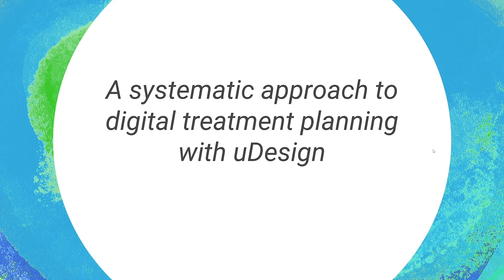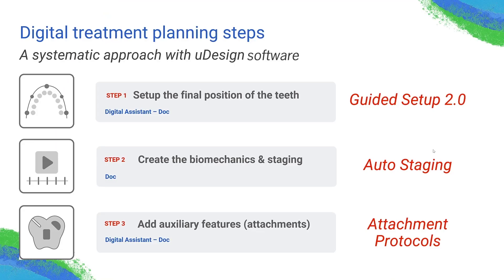The one thing I like to recommend is to develop a systematic approach to digital treatment planning with UDesigns, and I will break this down and propose an idea for you. You can follow it or modify it a little bit. When it comes to digital treatment planning steps, I like to break it down into three different steps. The first step is to develop your final position of the teeth, and that's where the guided setup will help you finalize where the teeth are going to go. Then the next step, you create your biomechanics — you can use auto staging or advanced staging.